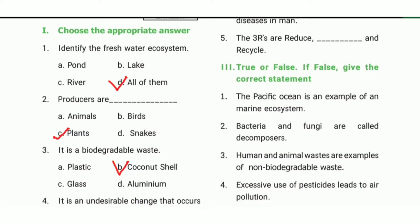2nd one: producers are called plants. The answer is option C, plants. 3rd one: it is a biodegradable waste. The answer is coconut shell.